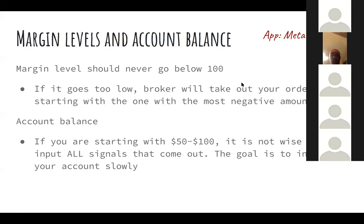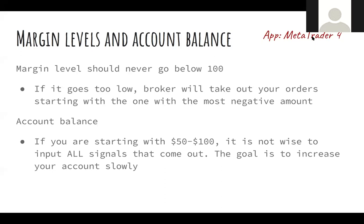Margin level determines how much you are leveraging, whether you're over-leveraging, and if your account is about to blow out. You never want margin level to go under 100%. If it goes too low, the broker will take out your orders starting with the one with the most negative amount. For example, if you have $100 in your account with trades at negative $50, negative $20, and negative $10 — down $80 total — the broker takes out the negative $50 first, leaving you with $50 and a negative $30 still running. You really only have $20 to play with at that point.